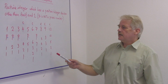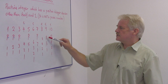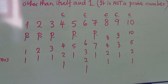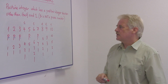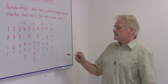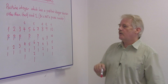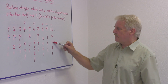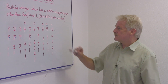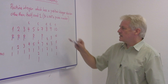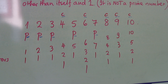Nine also has three factors: nine, three, and one. Three times three is nine, one times nine is nine — it's a composite number. Ten also has four factors: ten, five, two, and one. Two times five is ten, one times ten is ten.